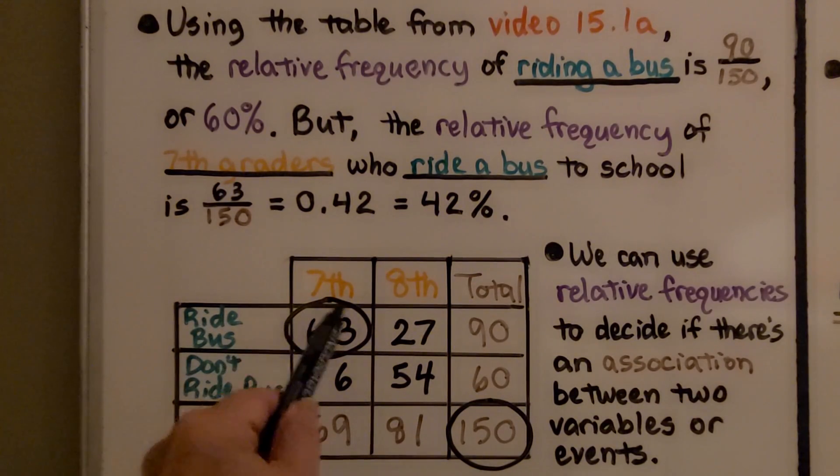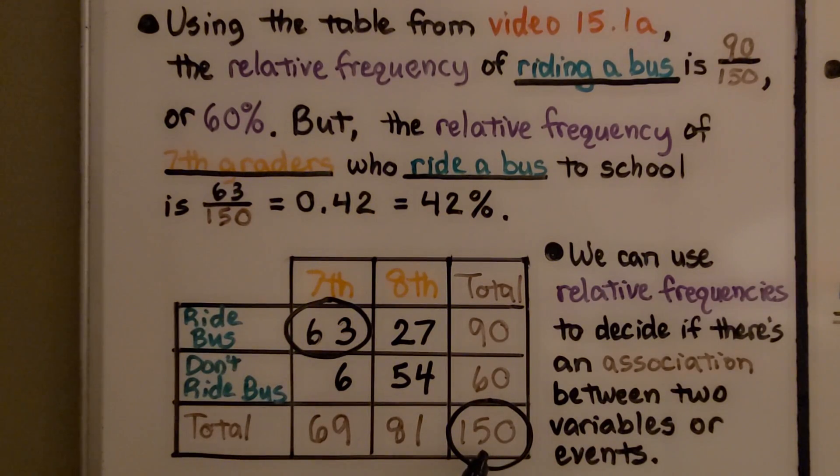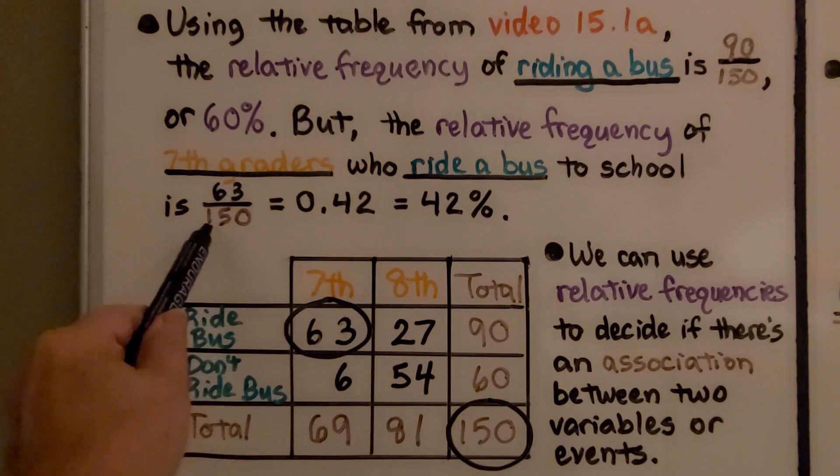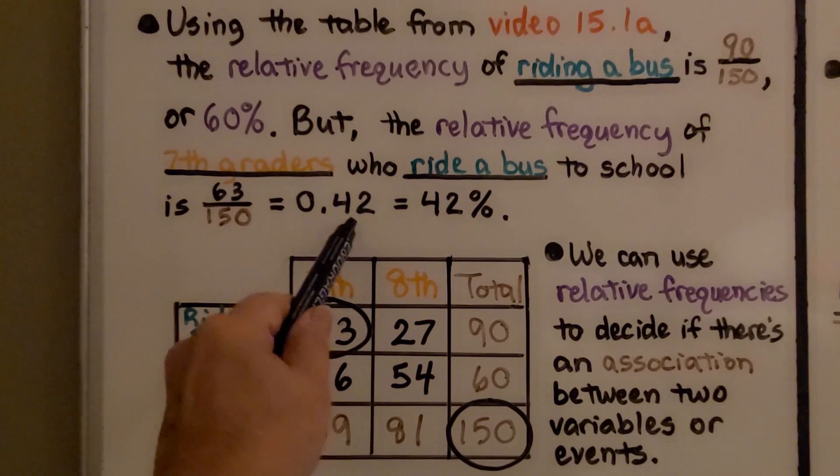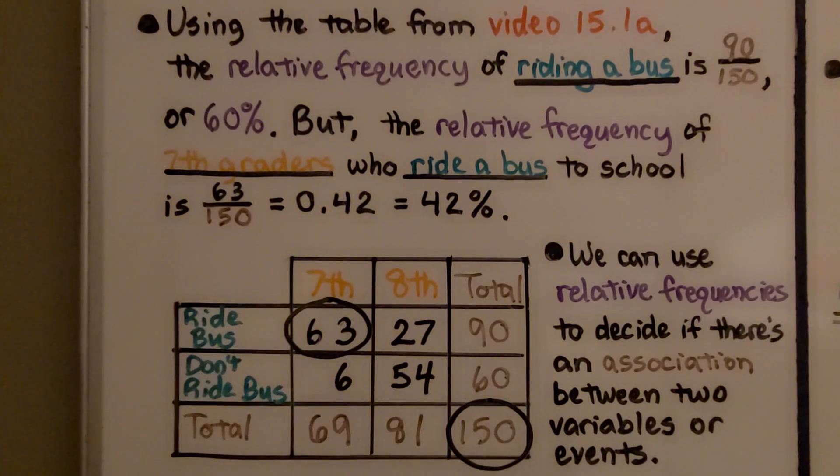But the relative frequency of 7th graders who ride the bus to school is 63/150. 63 divided by 150 is 0.42, which is 42%. We can use relative frequencies to decide if there's an association between two variables or events.